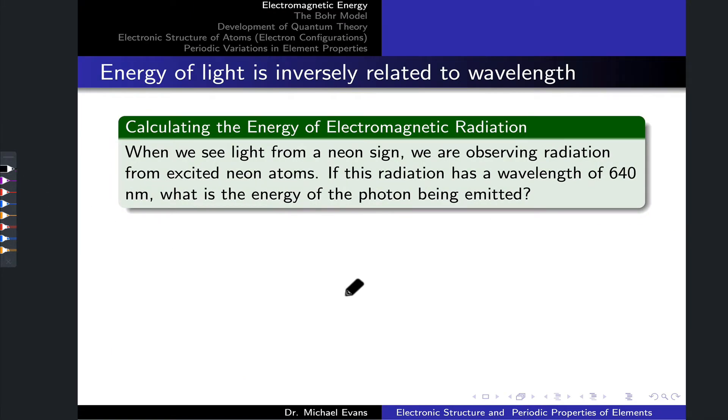Let's work a quick practice problem to understand the relations between energy, frequency, and wavelength that we've talked about so far for photons. When we see light from a neon sign, we're observing radiation from excited neon atoms. Some of that radiation has a wavelength of 640 nanometers. Hundreds of nanometers is typical of visible light in terms of wavelength.